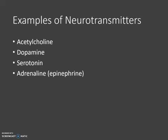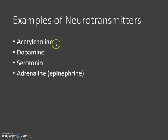Some examples of neurotransmitters include acetylcholine. This is the neurotransmitter we talked about in the muscular system because it's how a neuron stimulates a skeletal muscle to contract.